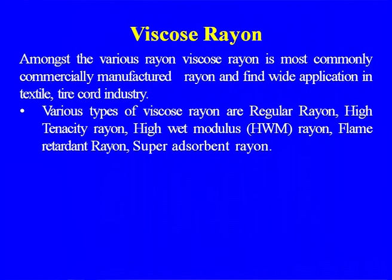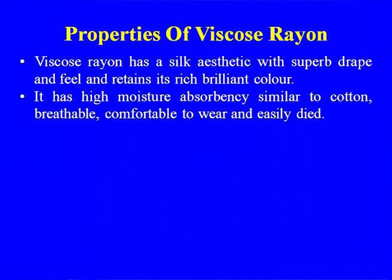Various types of viscose rayon include regular rayon, high tenacity rayon, high wet modulus rayon, flame retardant rayon, and super absorbent rayon. Viscose rayon has a silk aesthetic with superior drape and feel and retains its rich brilliant color. It has high moisture absorbency similar to cotton, which is why we are consuming more viscose blends along with acrylic fiber or polyester. The cost of viscose is less than cotton; it is breathable, comfortable to wear, and easily dyed.